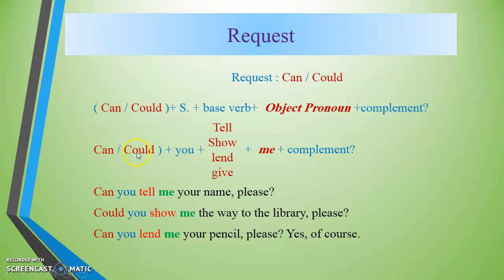Another example: 'Can you lend me your pencil, please?' Here the structure is: can + you (subject) + lend (base verb) + me (object pronoun) + your pencil (complement). The answer can be 'Yes, of course.'